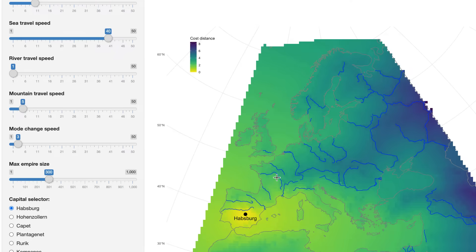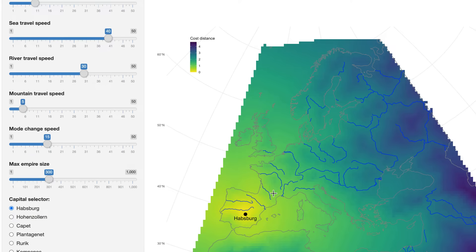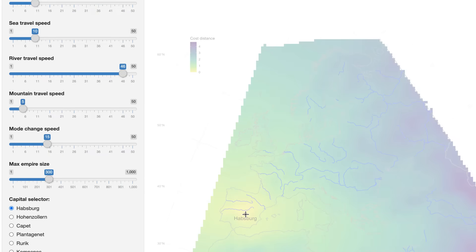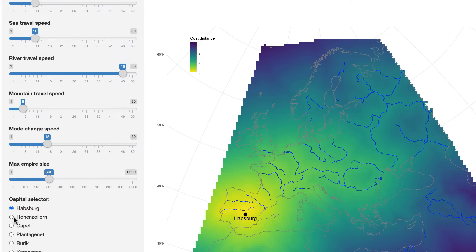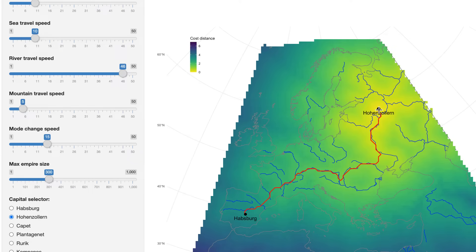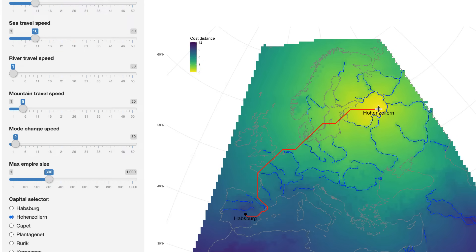If we set the mode change speed to really low and river travel speed to also really low, we get a barrier effect — there are sort of shadows when we try to cross the rivers. But if we instead set mode change speed to really high and also increase river speed to really high, we get another pattern: we see more yellow around the rivers, making it advantageous to use rivers for transport.